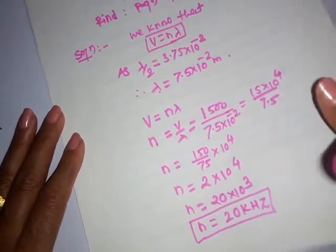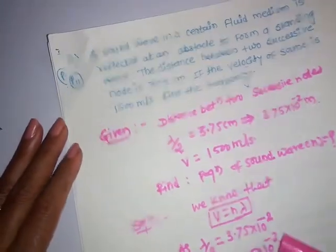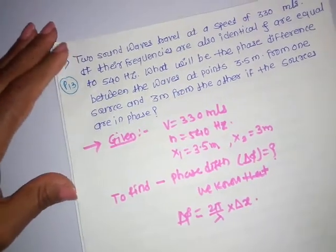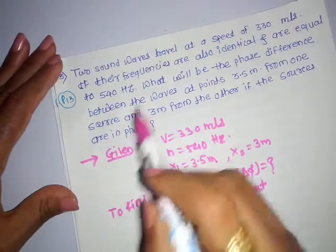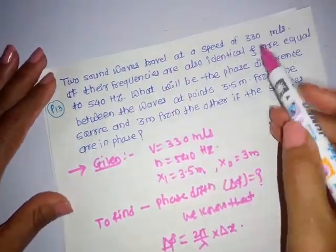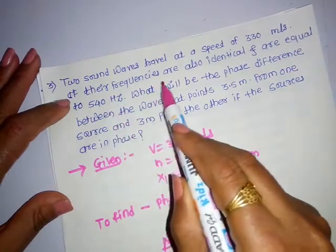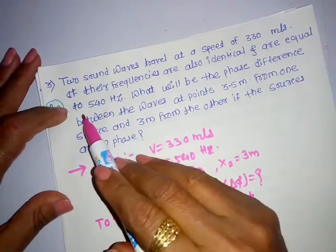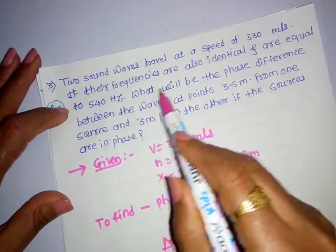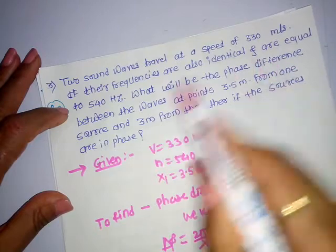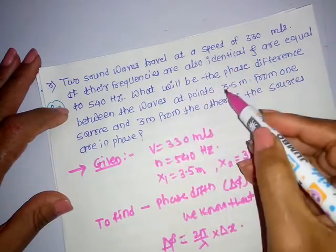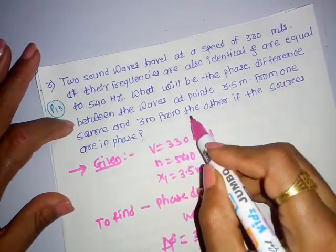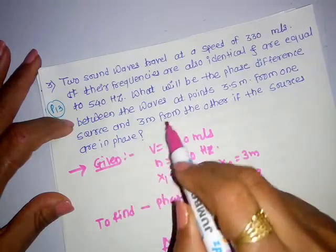Next problem, number 3 (book number 13). Two sound waves travel at a speed of 330 m/s. Their frequencies are identical and equal to 540 Hz. What will be the phase difference between the two waves at a point 3.5 m from one source and 3 m from the other, if the sources are in phase?